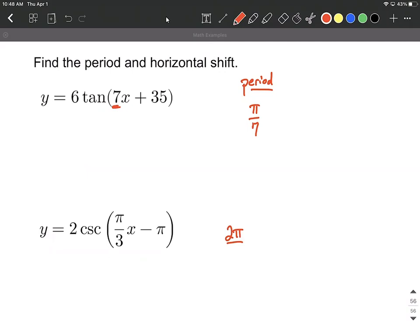So we're going to start with 2 pi, and we're going to divide by this multiple on the inside, divide by pi over 3, which is going to be equivalent to taking 2 pi and multiplying by the reciprocal, so taking 3 over pi. We're allowed to cancel out these pi's, so 2 times 3 is going to result in a period of 6.